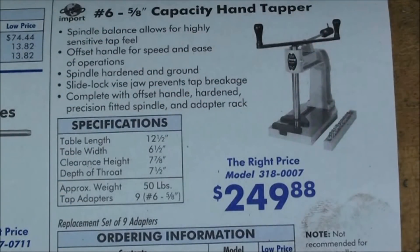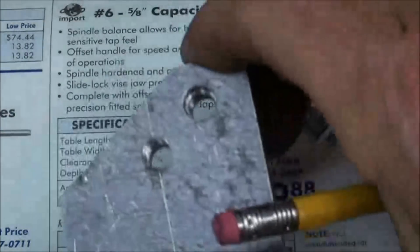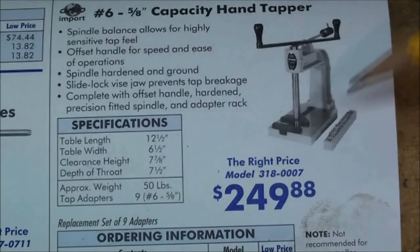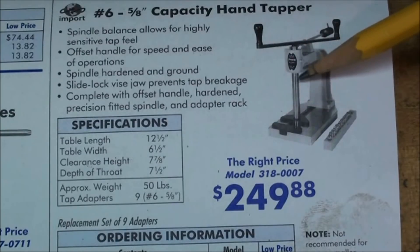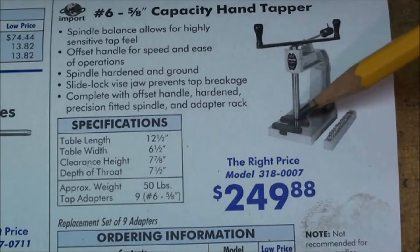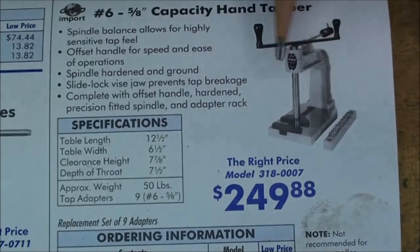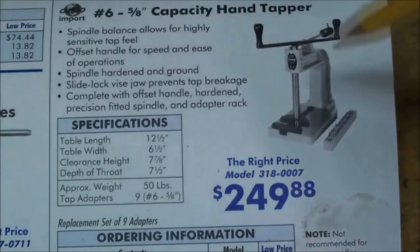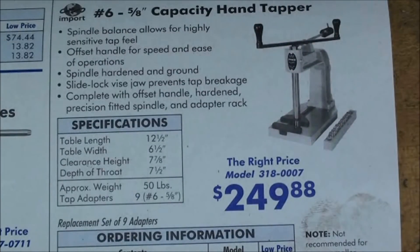This is a page out of the ENCO catalog. And everybody sells one of these. It's called a hand tapping machine. And you put your pre-drilled work on the little table there. And your tap mounted into this bar here. There's a tap wrench on the end of it. And this will move up and down. And it will hold the tap perfectly perpendicular with the work. But as you can see those are $250. And that's probably not something you're going to see in a home shop. But many commercial shops have these.